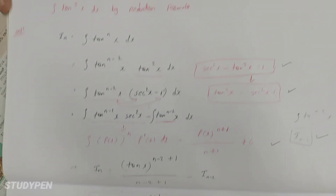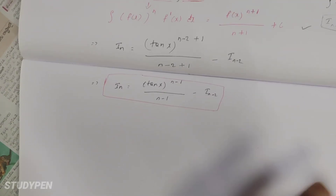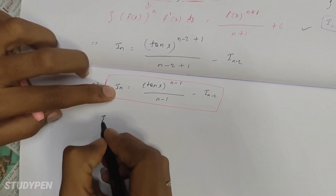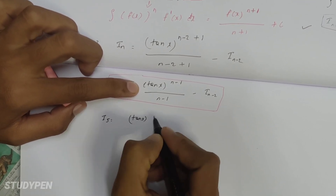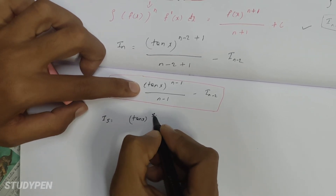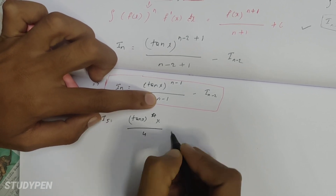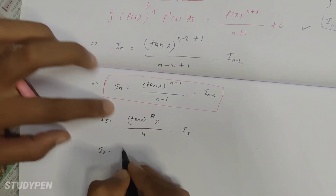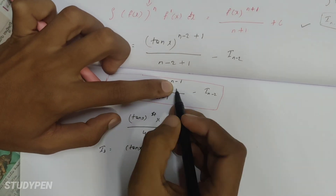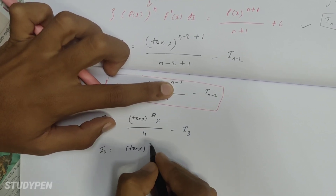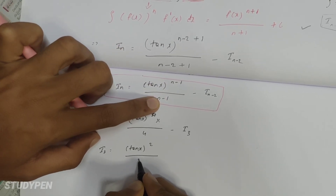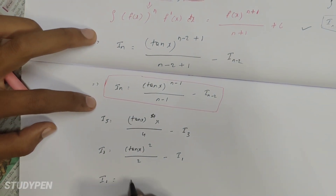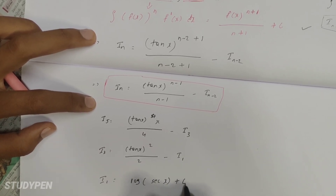Now the final question is integral of tan power of 5x. You already know integral tan power of 5x. Now I5 will be given — with n equal to 5. I5 equals tan x to the power of 5 minus 1, which is 4, divided by 5 minus 1, which is 4. Here 5 minus 2 equals 3, so next is I3. I3 is obtained by substituting: tan x power of 3 minus 1, which is 2, divided by 3 minus 1, which is 2. Then 3 minus 2 equals 1, giving I1.